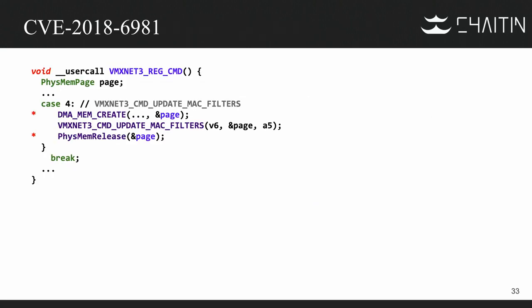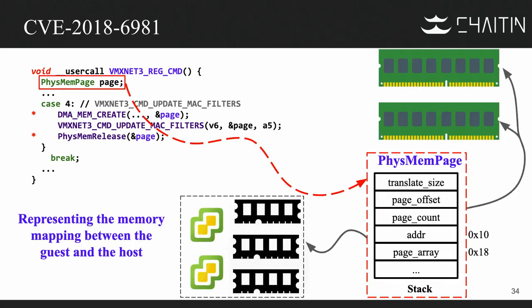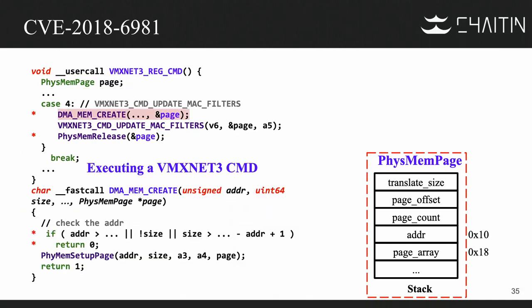Let's look at the first vulnerability — uninitialized stack use. Using MAC filter functionality, with the MAC address, we can see the memory mapping between the guest and the host. This is also used to transfer data between the guest OS and the host. The stack initialization runs code to execute a command.